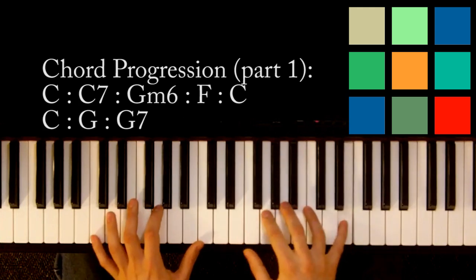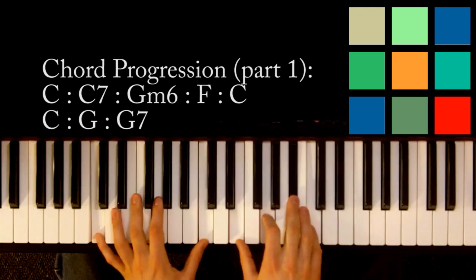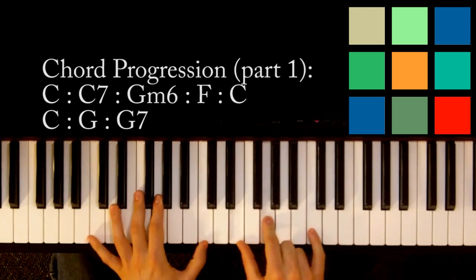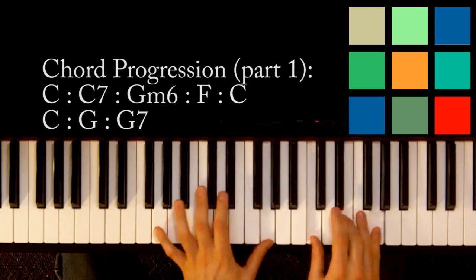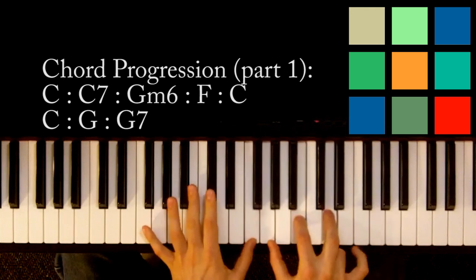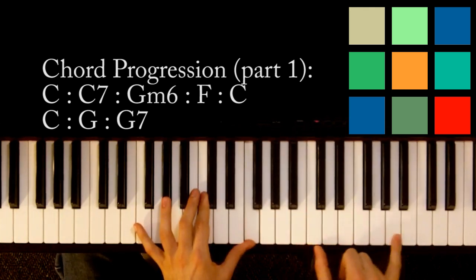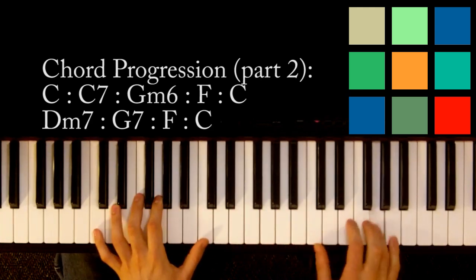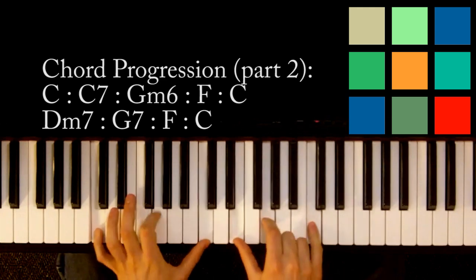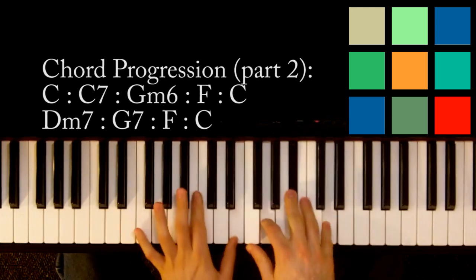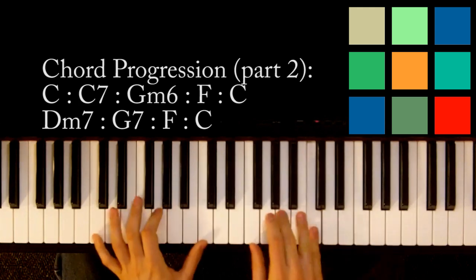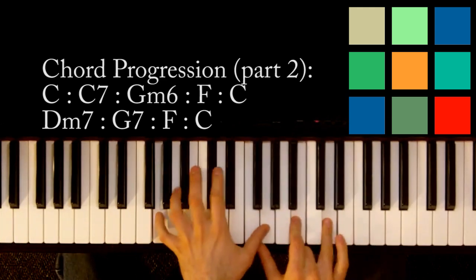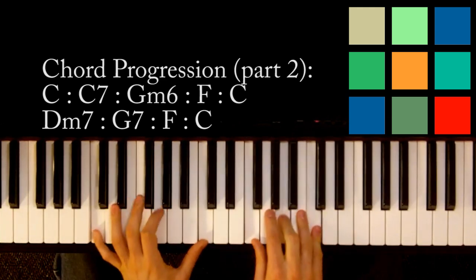So a quick review. Swing low. That's a C, C7, G minor 6, F, F to a C. C, C, C, G, G7. If you want the pickup, A to a G, and you probably want to swing low. But the chords are C, C7, G minor 6, F, F to a C, D minor 7, resolving to a G7, F to a C.